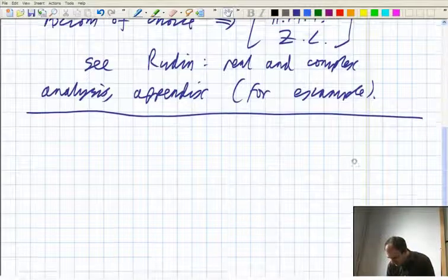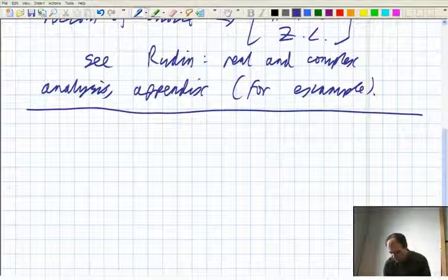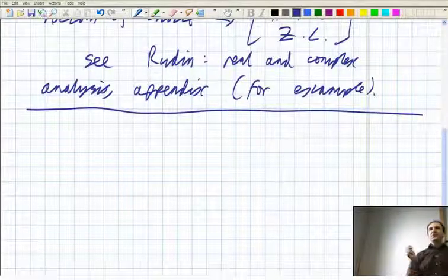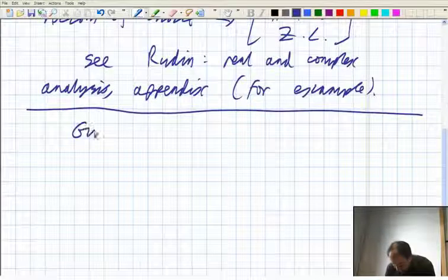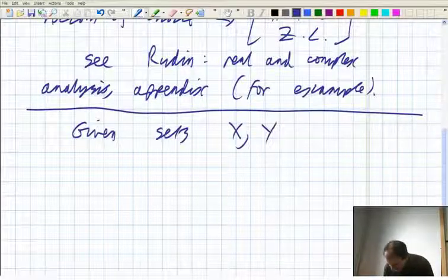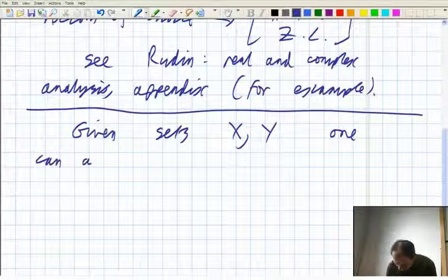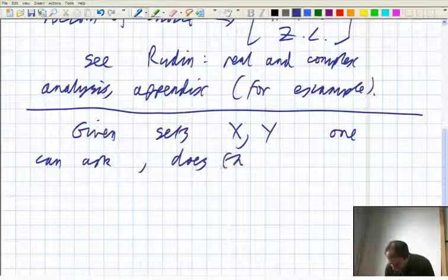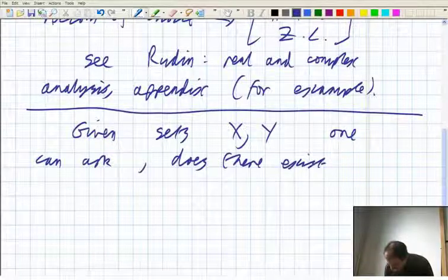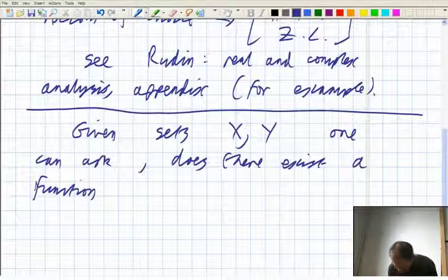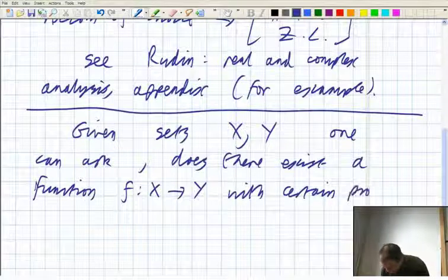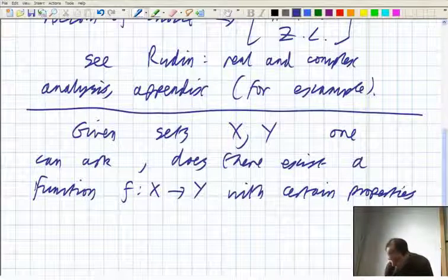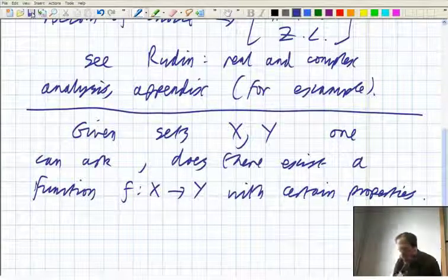So, so, in general, you can ask if you've got two sets, whether or not there's a function from one set to another which has certain properties. So, given sets X, Y, one can ask, does there exist a function f from X to Y which has a certain combination of properties?